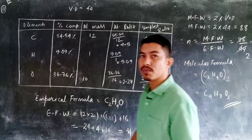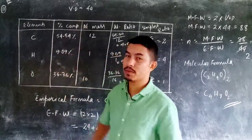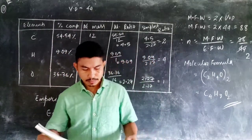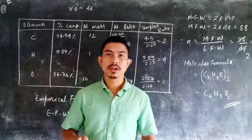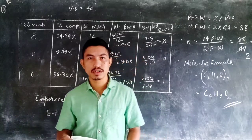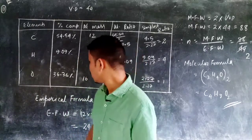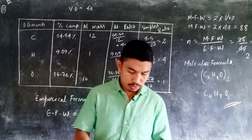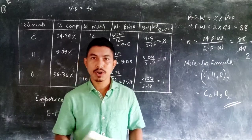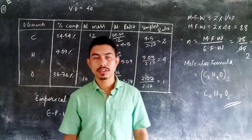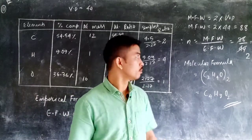So this is how we find the empirical formula and the molecular formula when the percentage composition and the vapor density are given. This is all we have to cover: percentage composition, molecular formula, and empirical formula. I want you all to complete the exercises on page numbers 90 and 91 and send me the answers on my WhatsApp number. If you have any queries, you are always free to ask me. Thank you.